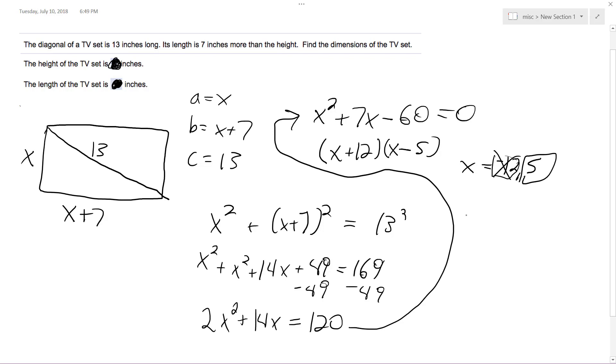So let's check that out. So the height is going to be equal to 5, and the length's going to be equal to 5 plus 7, which is 12.